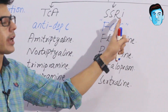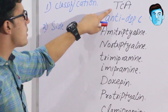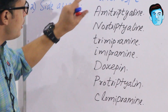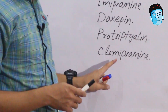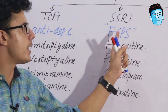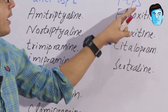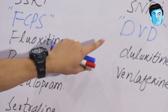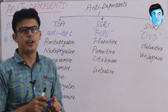To summarize the classification: antidepressants are divided into three major groups — tricyclic antidepressants (mnemonic ANTIDPC: amitriptyline, nortriptyline, trimipramine, imipramine, doxepin, protriptyline, clomipramine), selective serotonin reuptake inhibitors (mnemonic FCPS: fluoxetine, citalopram, paroxetine, sertraline), and serotonin and noradrenaline reuptake inhibitors (duloxetine and venlafaxine).